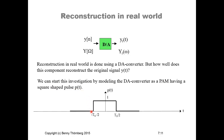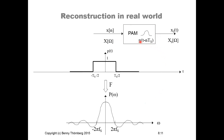This is reasonable because during each sampling period, the output of the D-to-A converter holds a constant amplitude proportional to the input number. We know how the pulse looks in the time domain — a square shape — and now we want to analyze how this pulse looks in the frequency domain by applying the Fourier transform, which is a method to analyze the frequency content of the pulse.